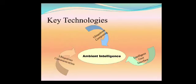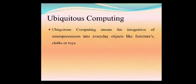Key technologies. There are mainly three key technologies in AmI: Ubiquitous computing, ubiquitous communication, and intelligent user interface. Ubiquitous computing is a concept of software engineering and computer science where computing is made to appear everywhere and anywhere. Ubiquitous computing can occur using any device, in any location, and in any format.